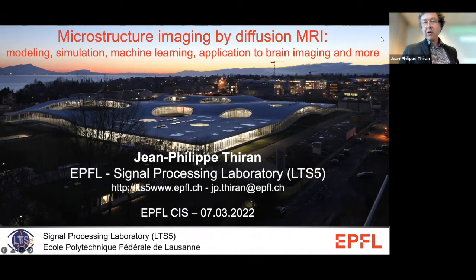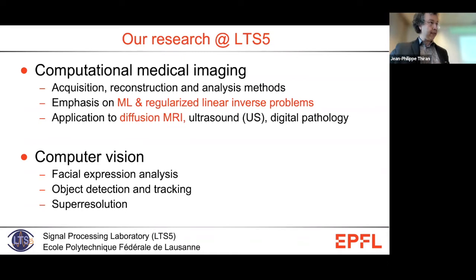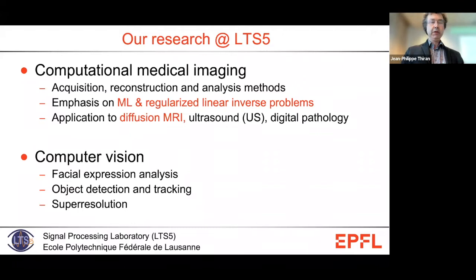I'm going to talk about medical imaging and a special type called diffusion MRI, and try to show you what we are doing in this domain, what we can do, and what are the perspectives. Our research topics are computational medical imaging — how to acquire, reconstruct, and analyze medical images — with a strong focus on machine learning techniques and inverse problems. Applications include mostly diffusion MRI, but also ultrasound imaging and digital pathology, which is the analysis of tissue slices by computers.